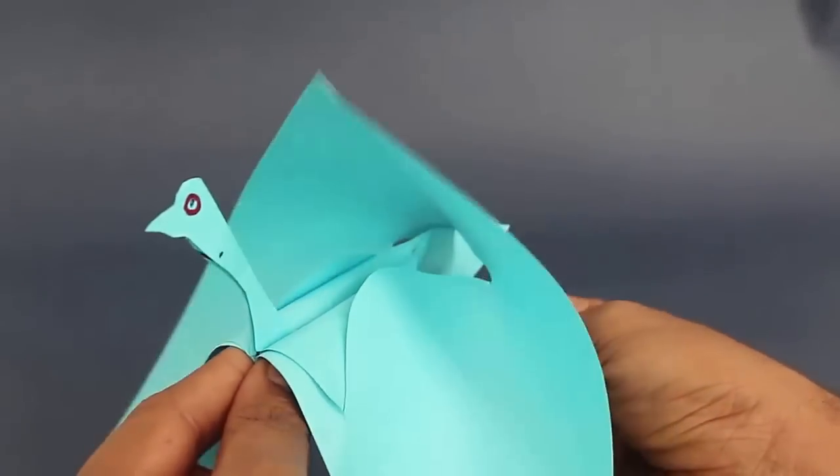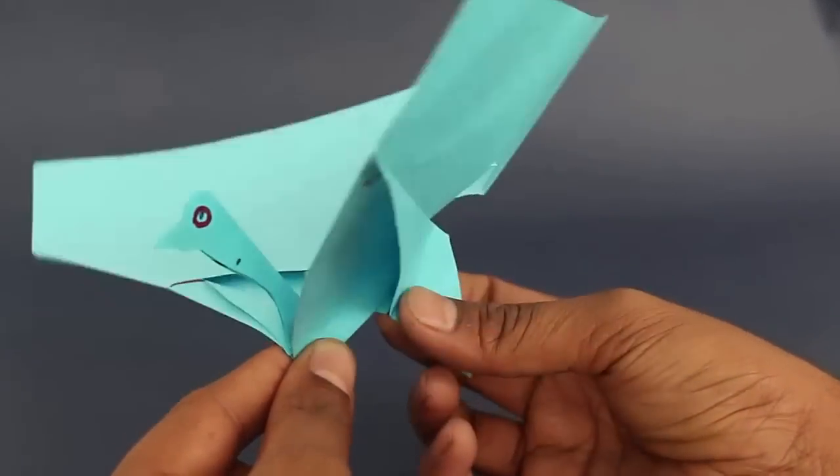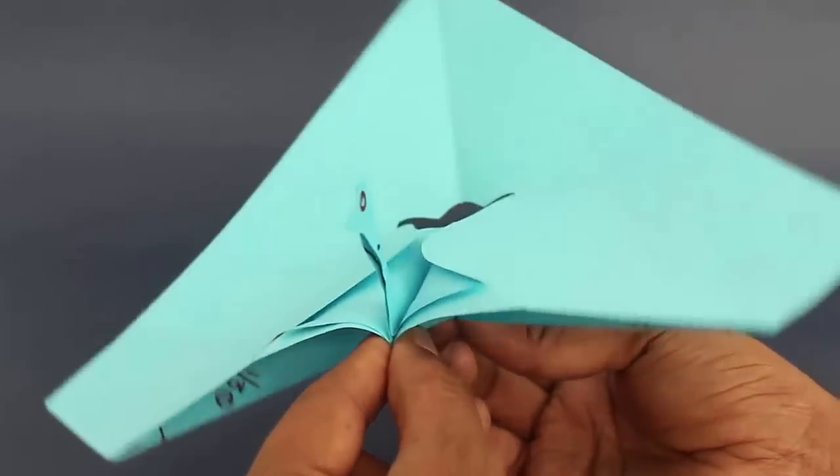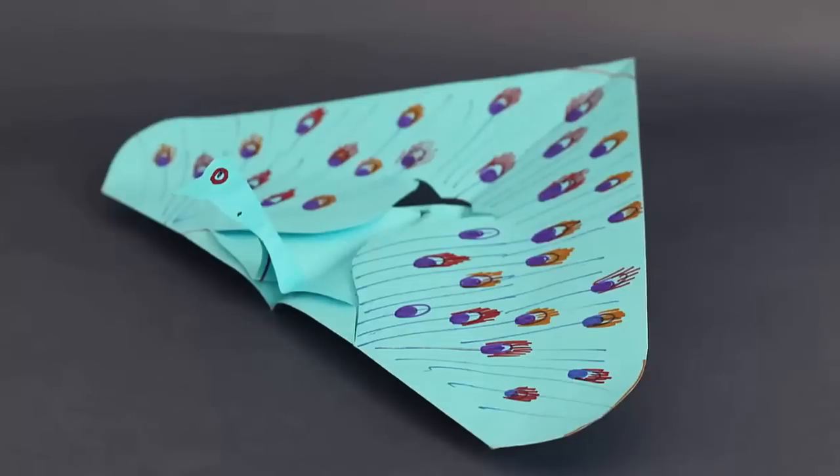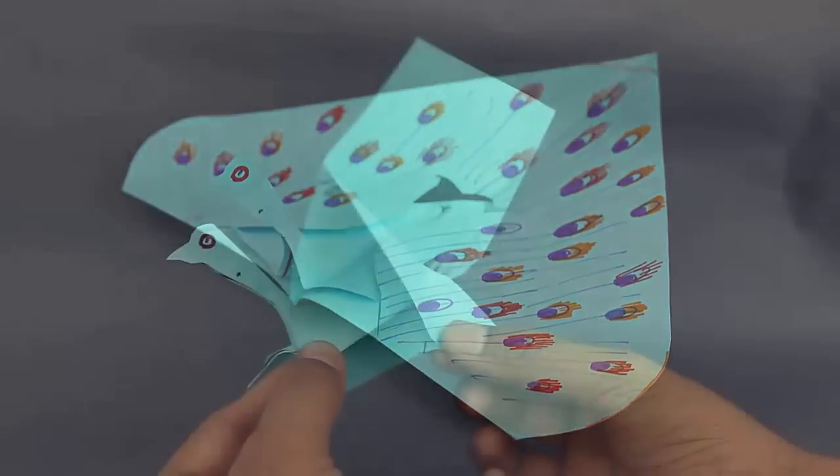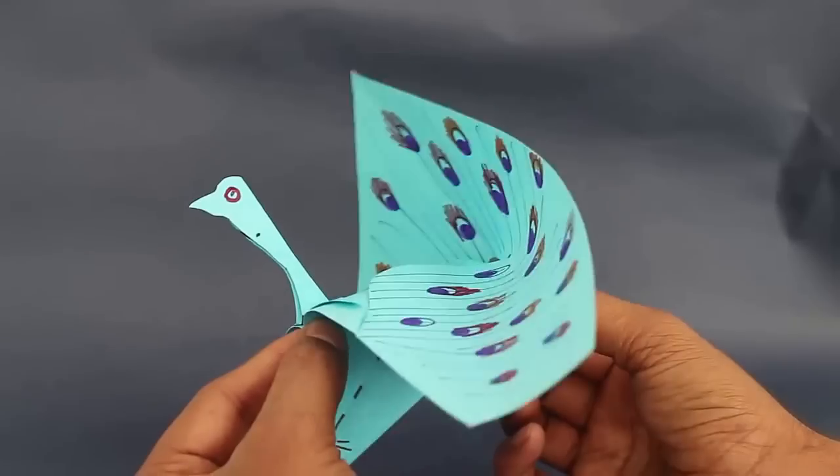Finally hold the neck of the peacock with one hand and pull the flap down with the other. This will make the peacock's wings lift and fall.